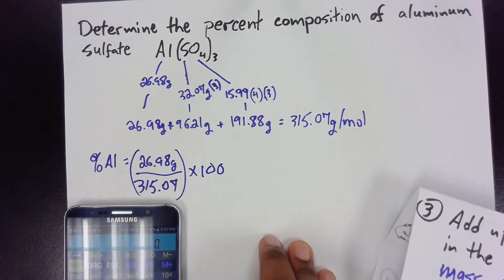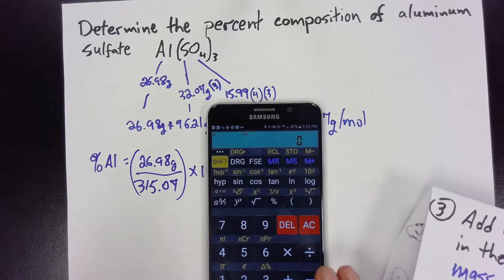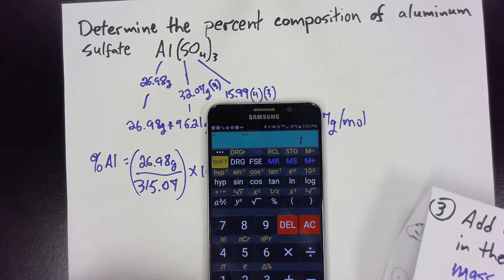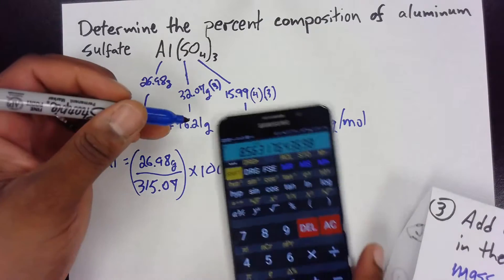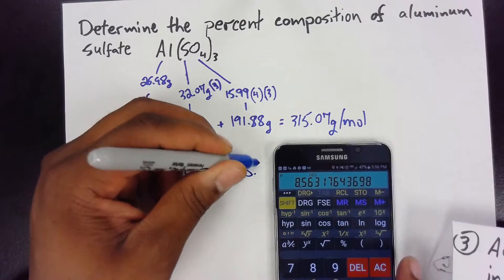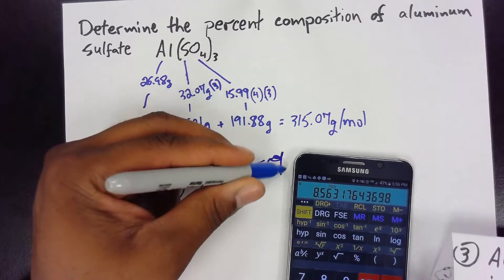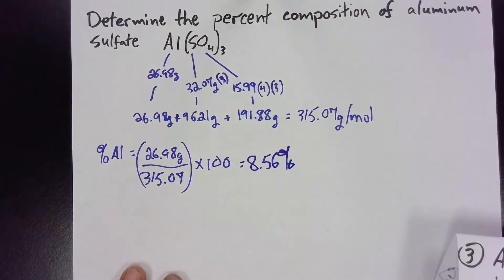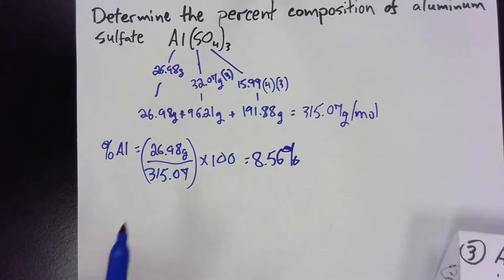Calculating that in the calculator: 26.98 divided by 315.07 times 100 gives 8.56 percent. That's our percent aluminum. Then to get the percent sulfur and percent oxygen we'll do the same thing.